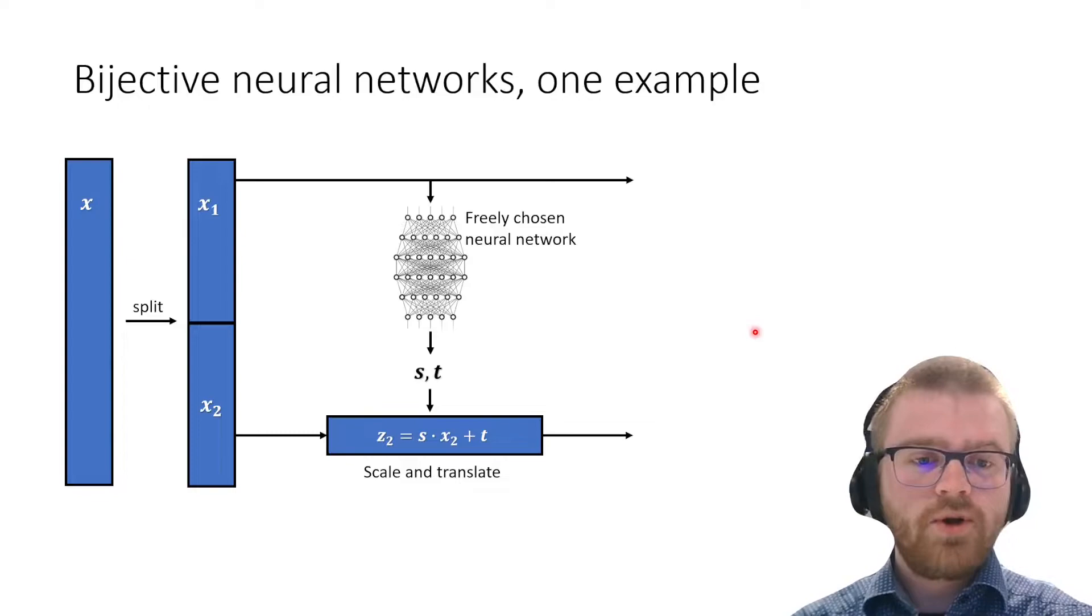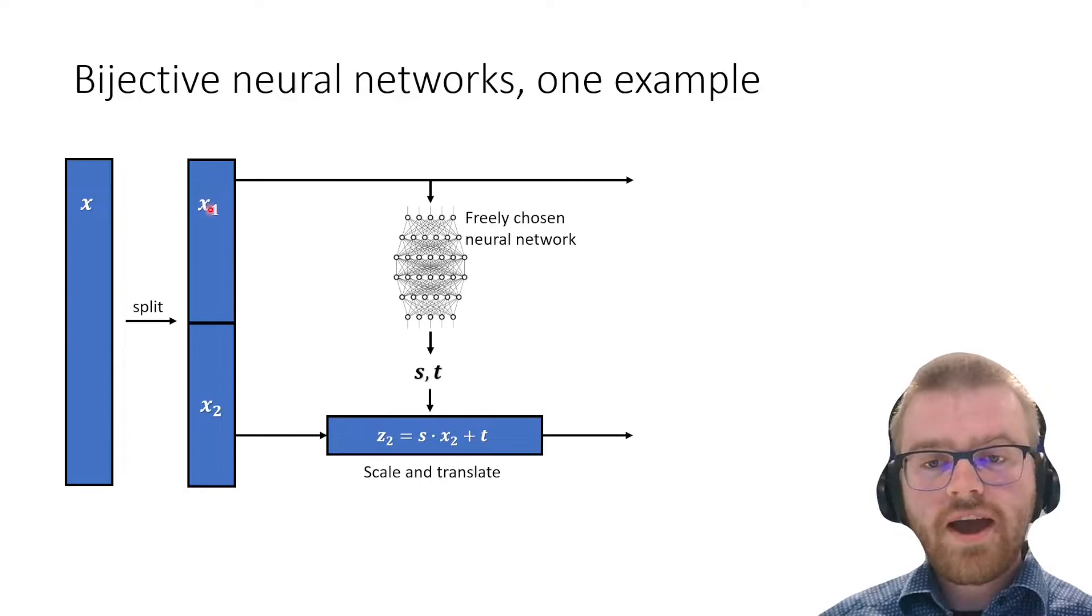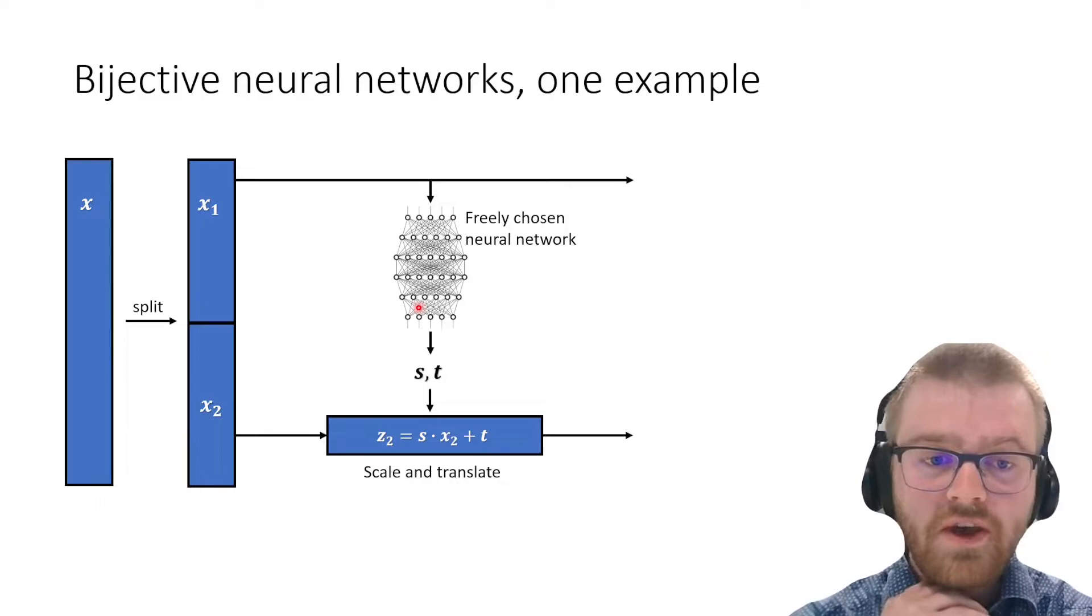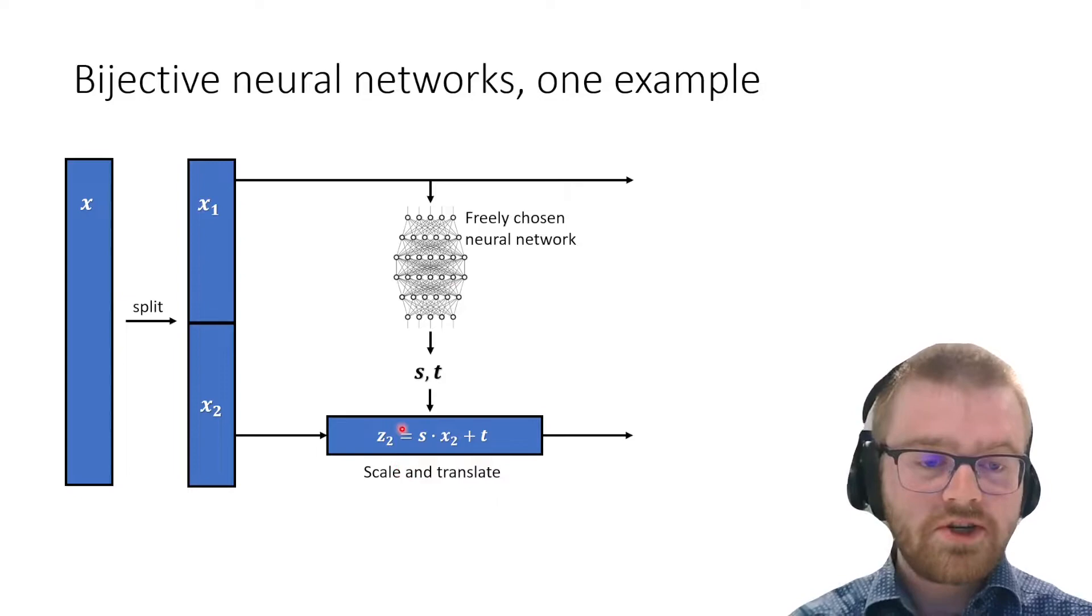How do we implement this in neural networks? One example is the affine coupling. We have an input vector x which is rather large, and we split this vector into x1 and x2. Then x1 is pushed through a freely chosen neural network—this network can be anything: convolutional, recurrent, linear, it doesn't really matter—and it will output a scale and a translate variable.